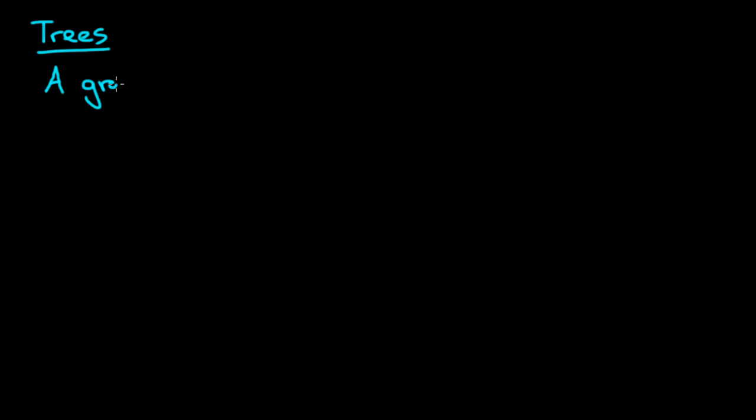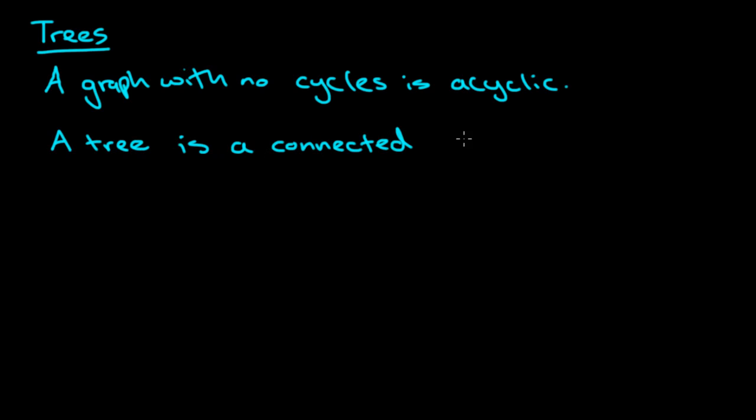First, we should realize that an acyclic graph is a graph with no cycles. So a graph with no cycles is acyclic. And a tree is a connected acyclic graph. So that's the definition.